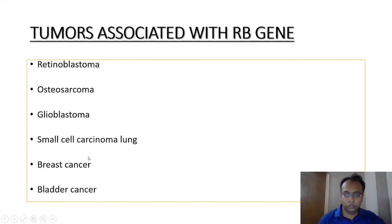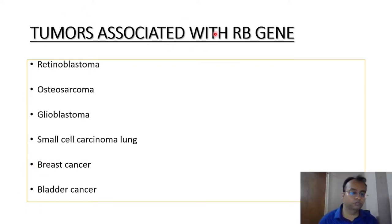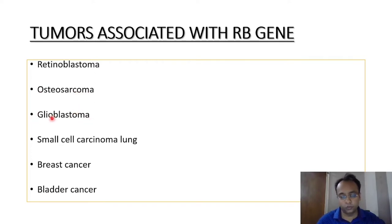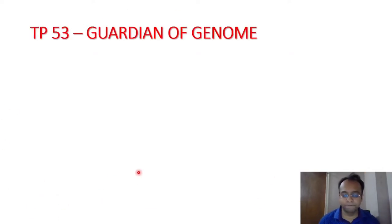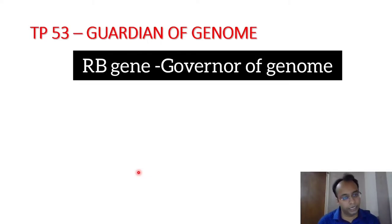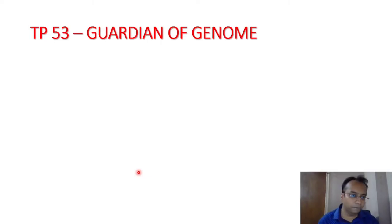Tumors associated with RB gene mutation include: retinoblastoma (most common and important), osteosarcoma, glioblastoma, small cell lung carcinoma, breast cancer, and bladder cancer. That covers the RB gene — the governor of genome. Now let's move to the most important tumor suppressor gene after RB: p53.